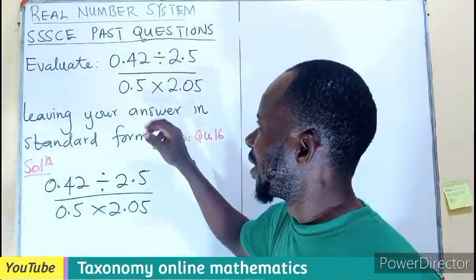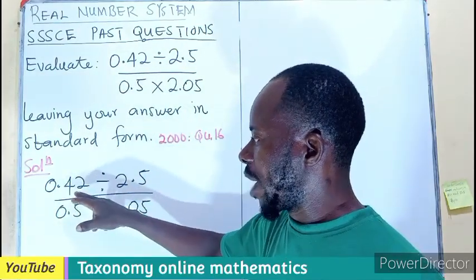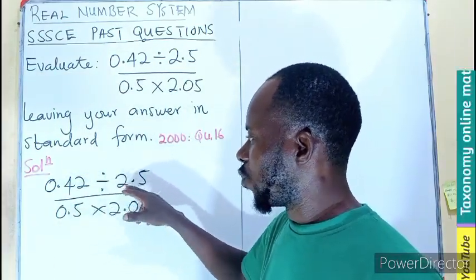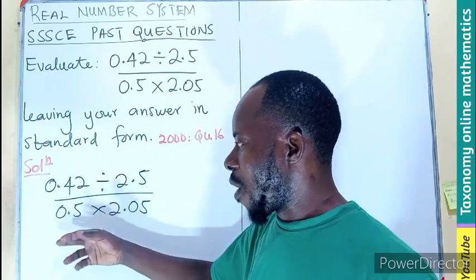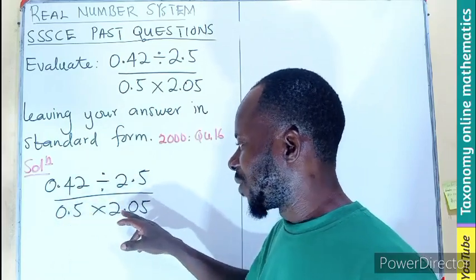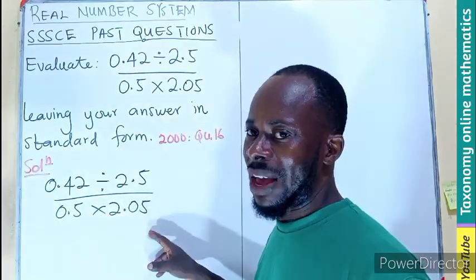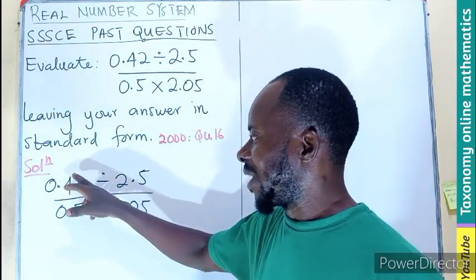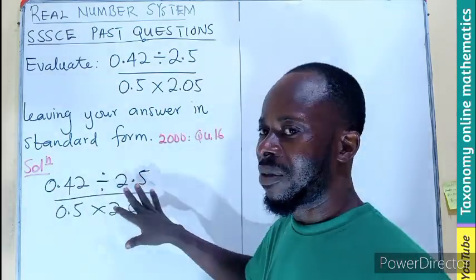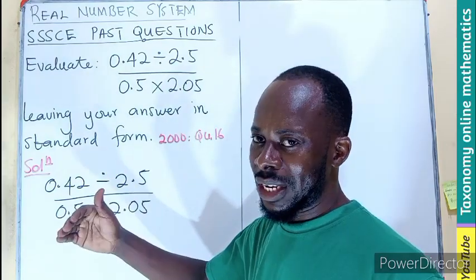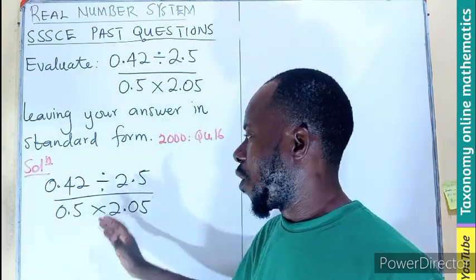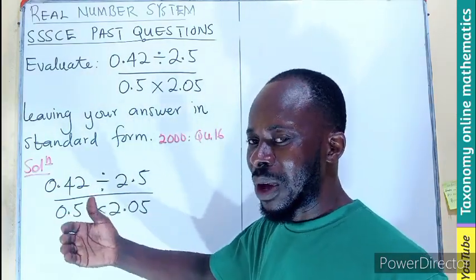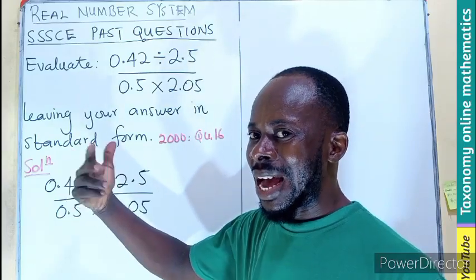We have to evaluate 0.42 divided by 2.5, divided by 0.5 times 2.05. In this, we can decide to change all the decimal numbers into fractions and compute, or change them into whole numbers with 10 exponents and integers.